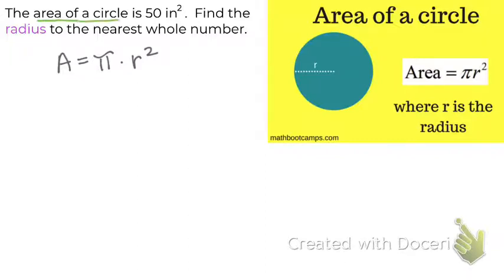They're telling us the area of the circle is 50. So for A, I'm going to put 50. And then they want us to figure out the radius. So that is our unknown. We're going to leave that as a variable. And that's what we're going to solve for. Let's write everything else down as it was.